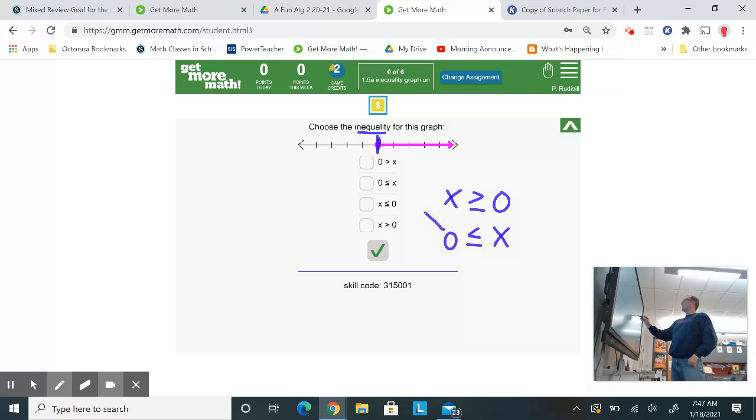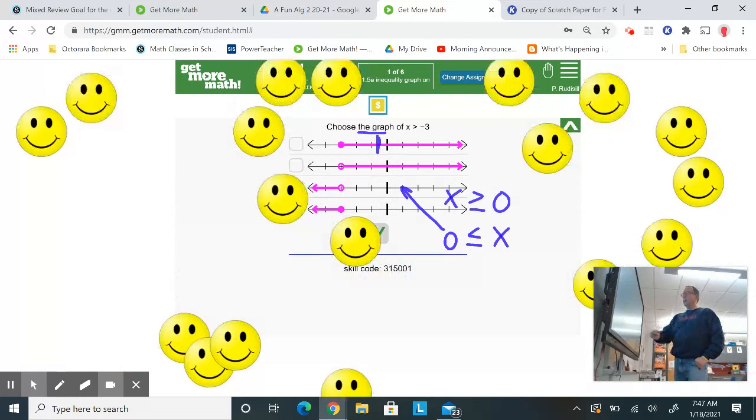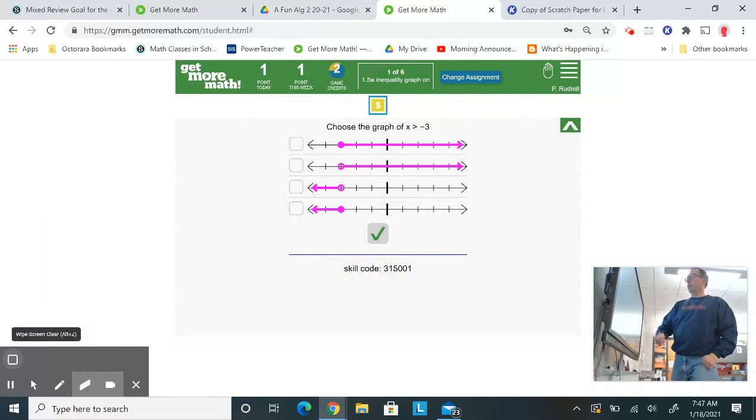But if I reverse and switch the sides here, I put x to the right, 0 is less than or equal to x. And that one I do see, which is right here. So make sure you're checking out what's being shaded. The shaded numbers represent the variable. If 0 is listed first, 0 has to be less than or equal to all those numbers. So let's tap in there, and we'll hit the green check mark. Done.